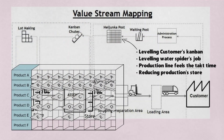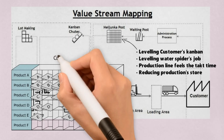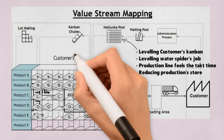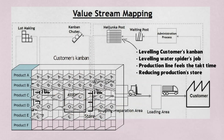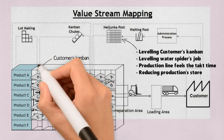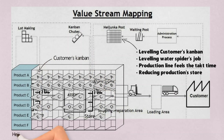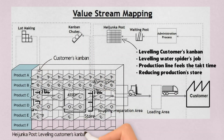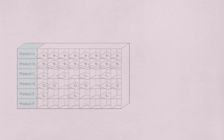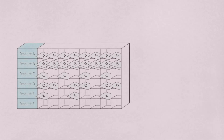This is an example of a HiJunka Post. The customer's kanban will be set in the HiJunka Post and leveled based on their quantity. The HiJunka box allows easy and visual control of a smoothed pulling time.